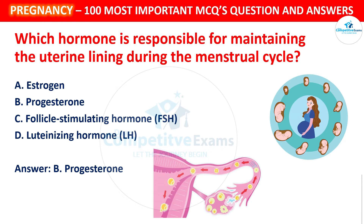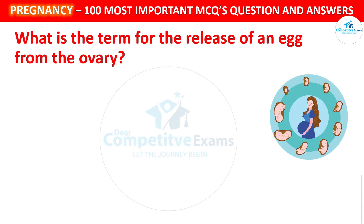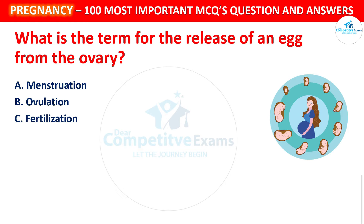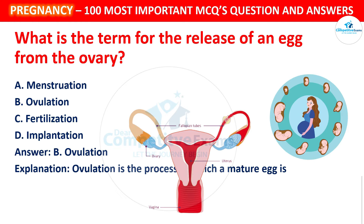Next question: What is the term for the release of an egg from the ovary? Your options: Menstruation, Ovulation, Fertilization, or Implantation. The correct answer is Ovulation. Ovulation is the process in which a mature egg is released from the ovary.